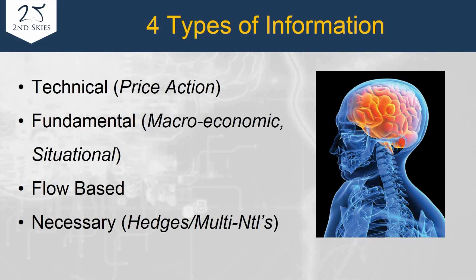There are also fundamental reasons — macroeconomic or situational — such as NFP, interest rate decisions, strengthening or weakening economic numbers. Brexit is a great example of a fundamental piece of information. There are millions of different interpretations of why that information would be used to trade.